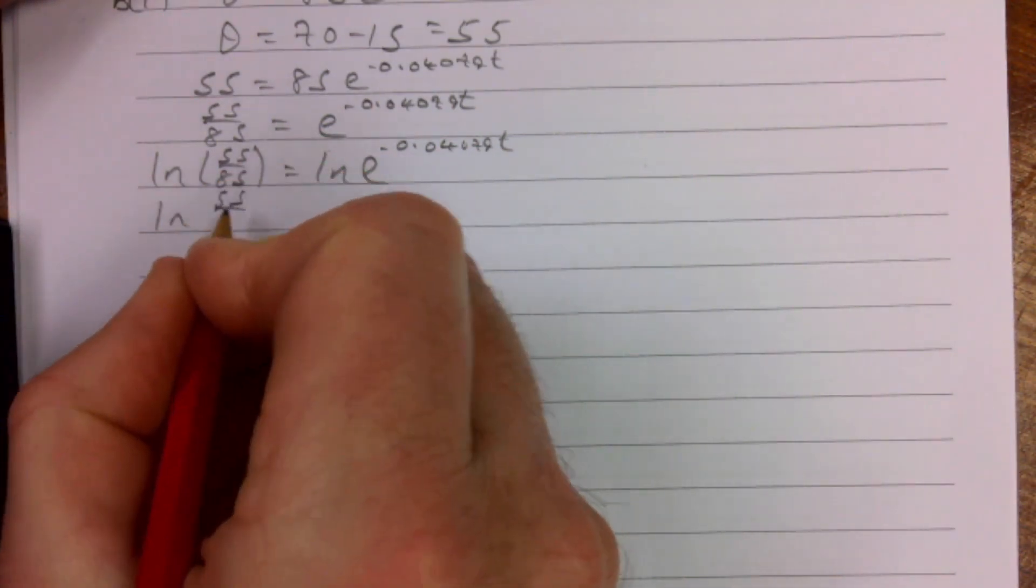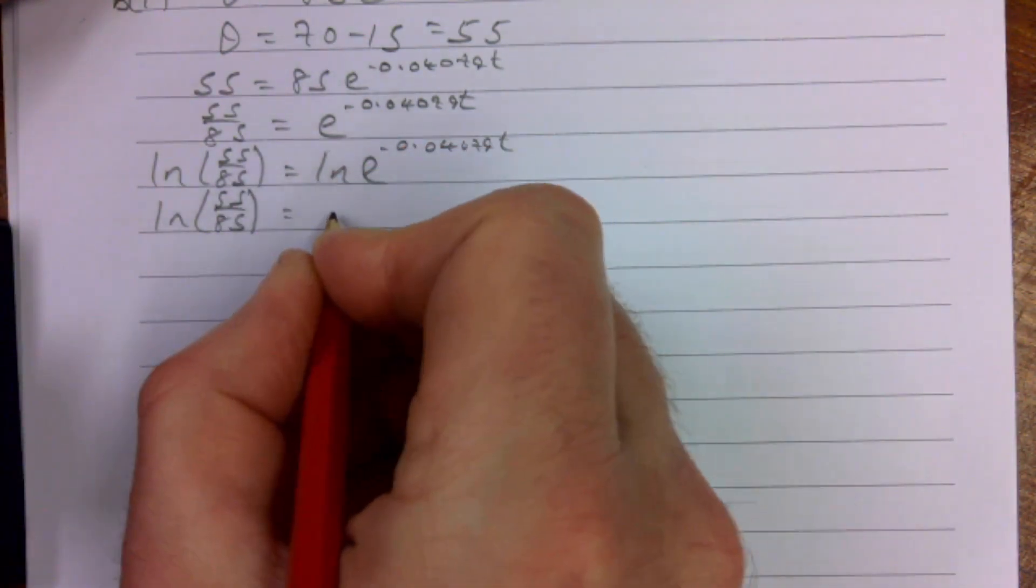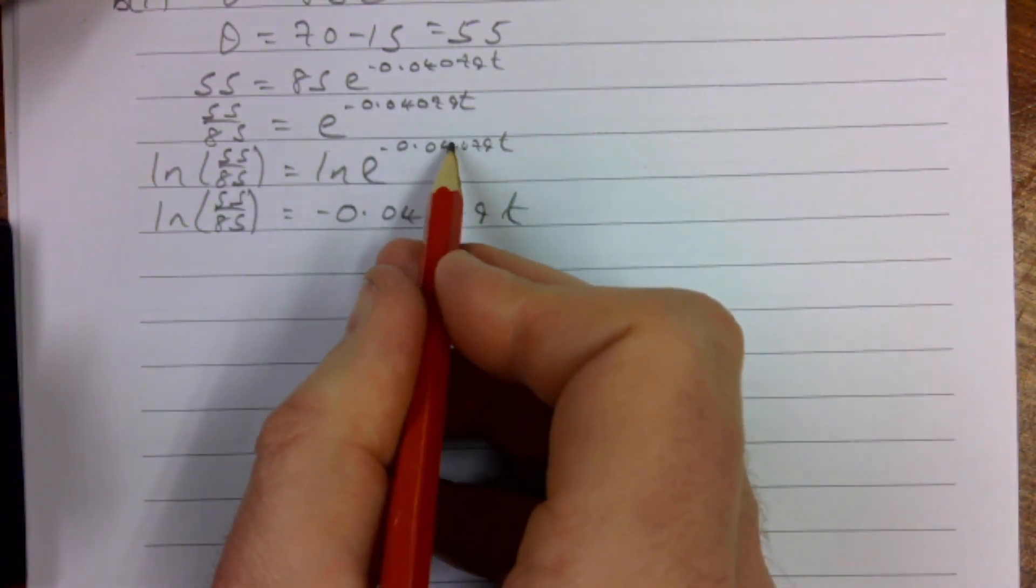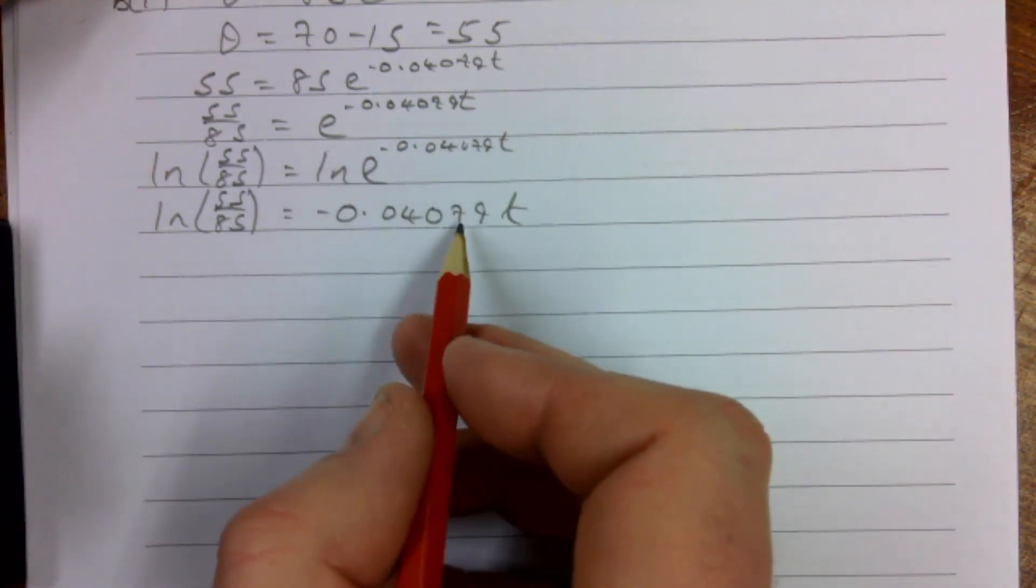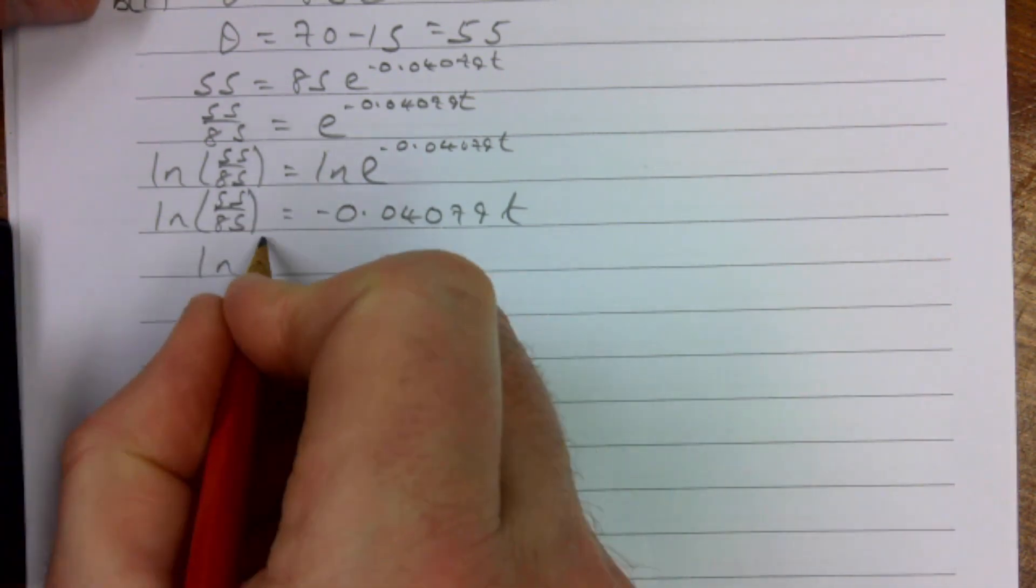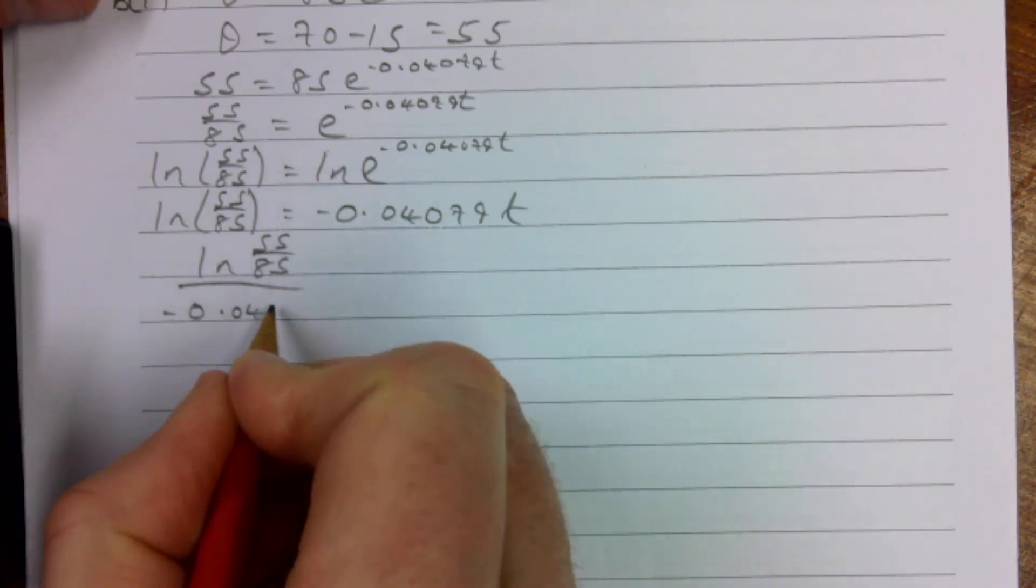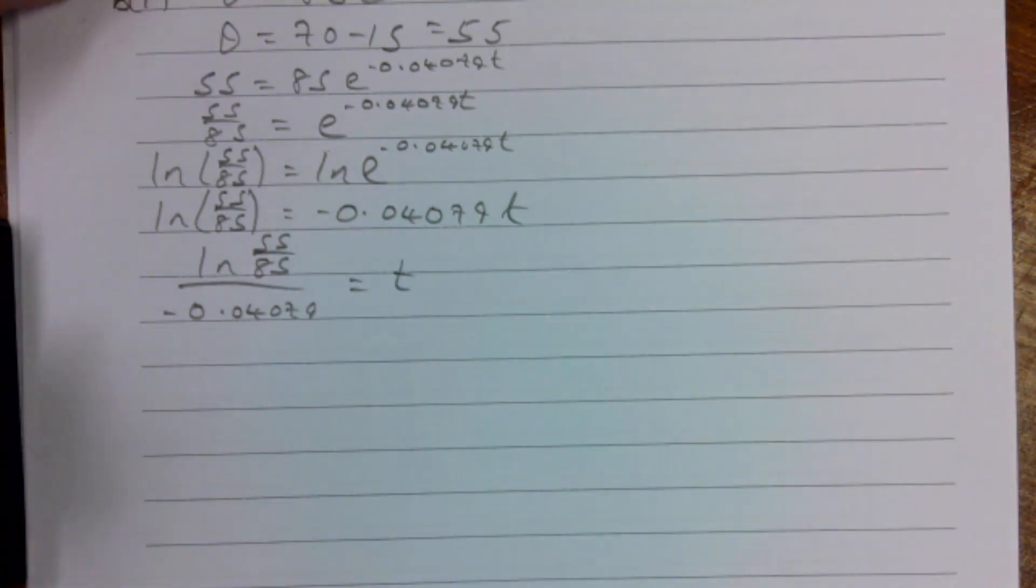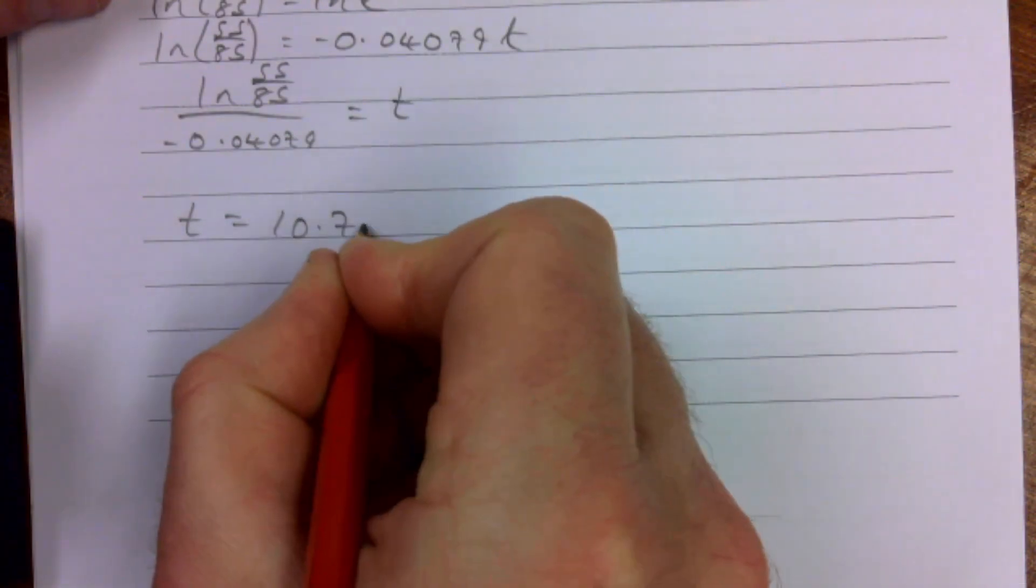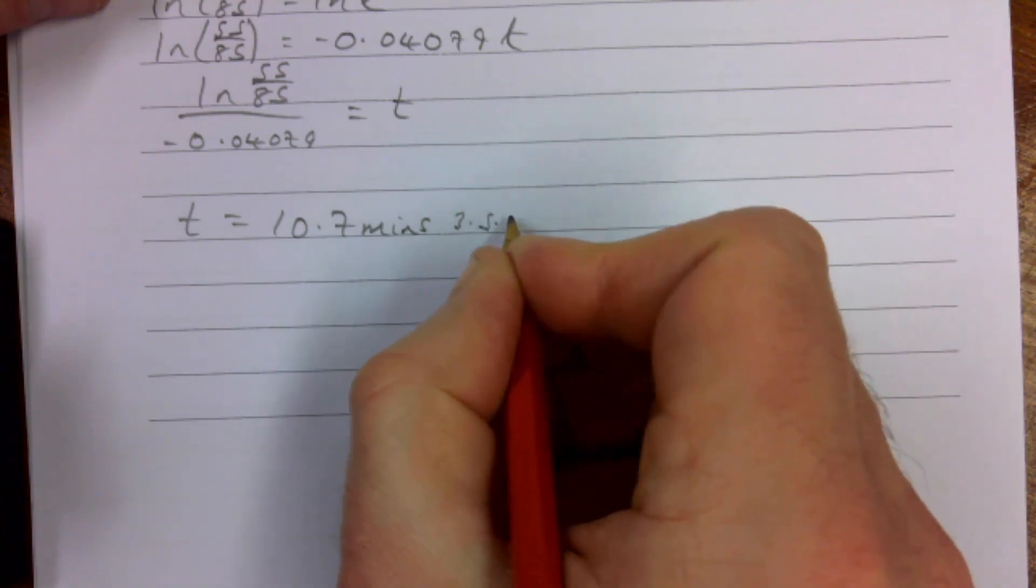So I'm going to have LN(55/85) = -0.040790t, because remember I've brought that power down to the front but LN(e) is just 1. So we're nearly there, t divided into this. So LN(55/85) divided by -0.040790 is t. And again put that into your calculator, you will get t is 10.7 minutes, that's my answer to 3 significant figures.